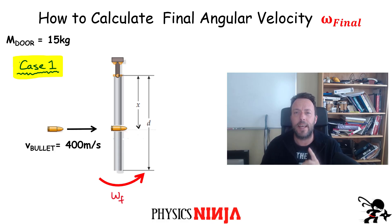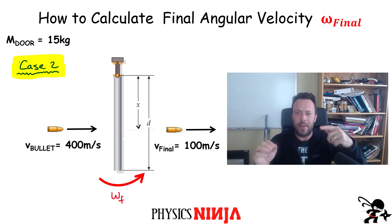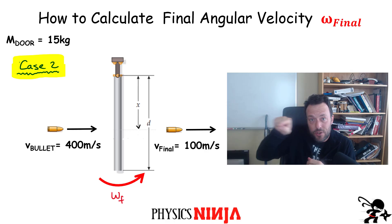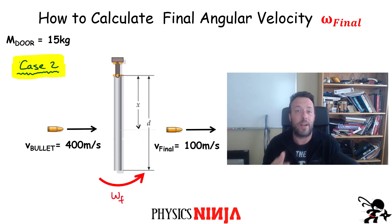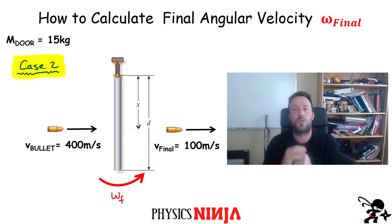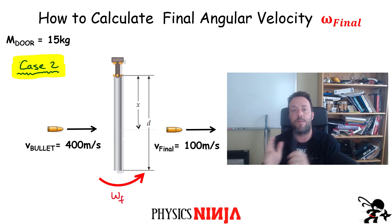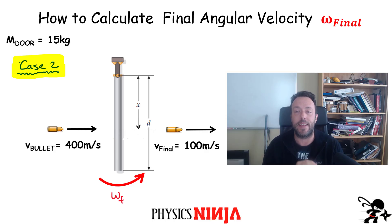In case number two, I'm going to take a slightly different variation. We're going to assume that the bullet doesn't get stuck — it's traveling fast enough that it penetrates right through, and after it's still traveling to the right at 100 meters per second. The door will still swing with some final angular velocity. I also want to look at energy in both cases — initial versus final — and compare the two. These are inelastic collisions, so we expect that energy is not the same before and after.